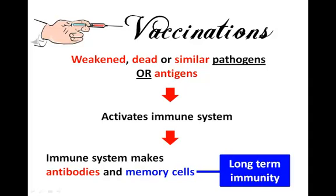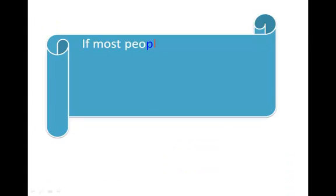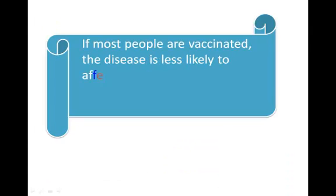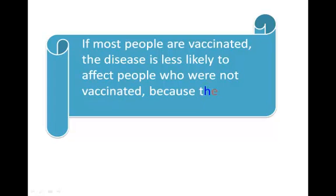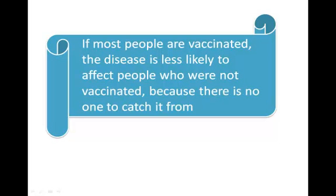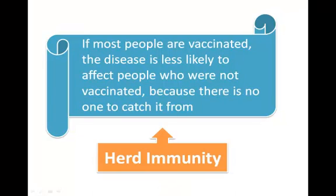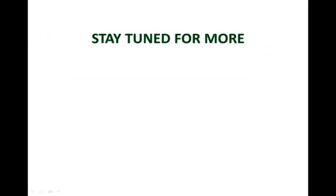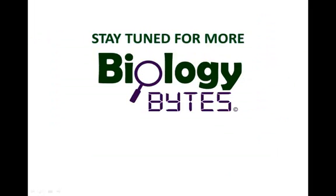How can this help control the disease? If most people in the population are vaccinated, the disease is less likely to affect the people who are not vaccinated, because there is no one to catch it from. This is called herd immunity. We just need to cover smoking and its effects now to wrap up this chapter, so stay tuned for more podcasts coming soon. Thanks for watching.